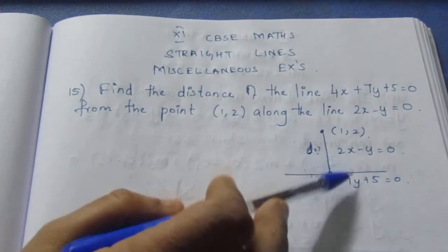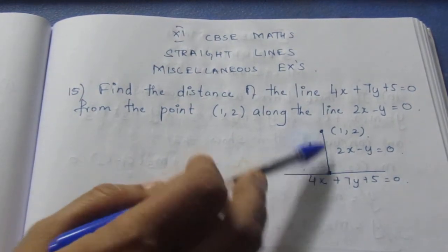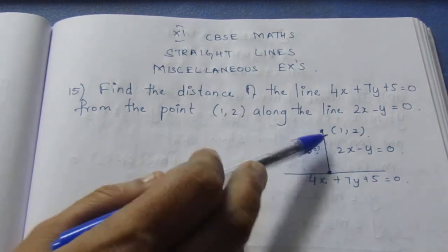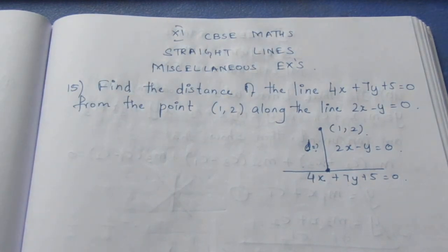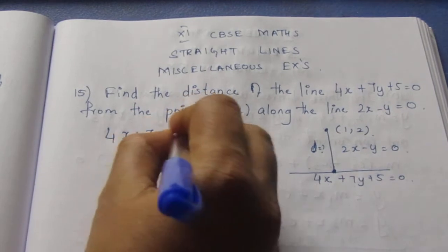If we do elimination for these two, we can find the intersection point, that is x comma y we can find. Then we can use the distance formula to find the length or the distance of the line. Now let me solve the two equations to find the x and y, that is the intersection of the point.